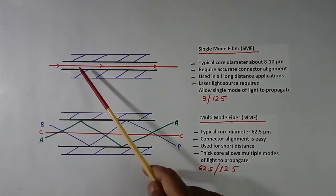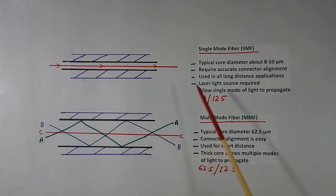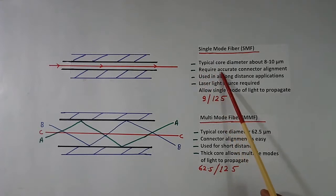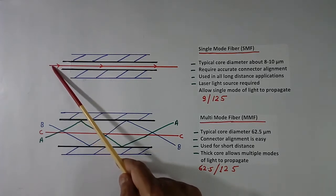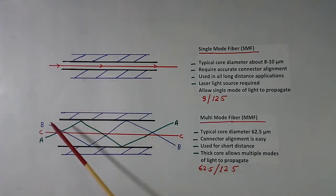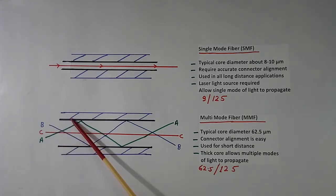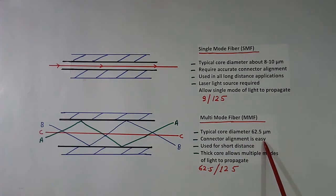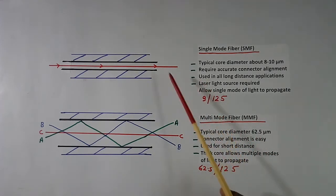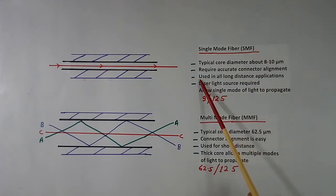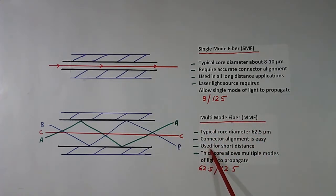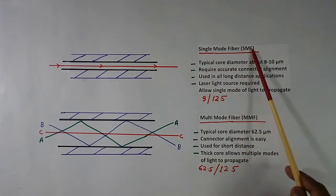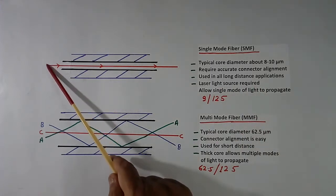The core diameter of MMF is much more than that of SMF. In single mode fiber, accurate connector alignment is required because the area is very small, so more precise light and connector alignment is needed. In MMF, the area available is more, so connector alignment is easier. SMF is used in all long distance applications, while MMF is used for short distance applications. SMF requires a laser light source.